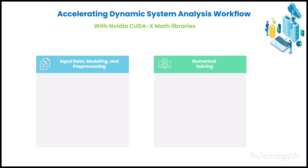Several stages of this workflow, but especially the numerical solving steps, lend themselves to orders of magnitude acceleration using NVIDIA GPUs and CUDA X math libraries. In the data, modeling, and preprocessing phases, cuRAND can produce large volumes of random data across generator and distribution types for use in stochastic methods. cuFFT transforms signals between time and frequency domains, and the accelerated algebraic multi-grid library includes a flexible solver and preconditioner composition system for the preprocessing phase.